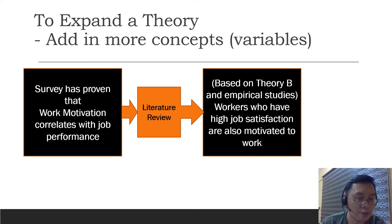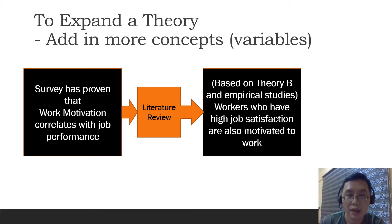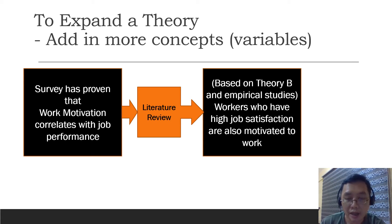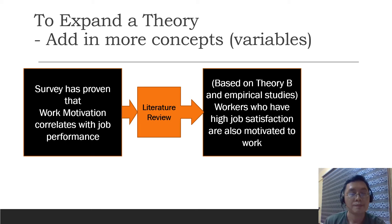Let's say your study shows that work motivation correlates with job performance, and you do a literature review concerning work motivation, job performance, and all related literature. You found that there is a Theory B, and there are some empirical studies about Theory B. They found out that workers who have high job satisfaction are also motivated to work. So how would this affect your theory?